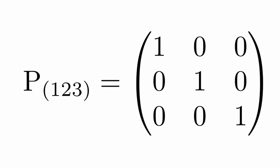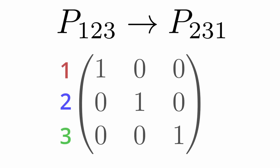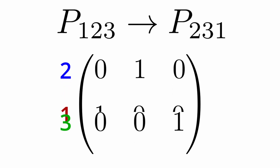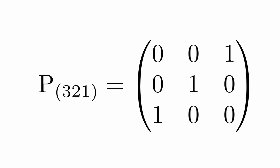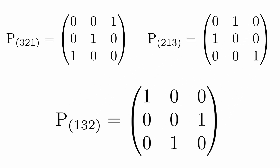We can ask how many row interchanges it takes to obtain a permutation matrix from the identity matrix. P sub 1,2,3 requires zero row interchanges. P sub 2,3,1 and P sub 3,1,2 require two row interchanges — for example, to go from P 1,2,3 to P 2,3,1 one has to exchange the first and second rows, and then exchange the second and third rows. The three permutation matrices P 3,2,1, P 2,1,3, and P 1,3,2 require only a single row interchange.